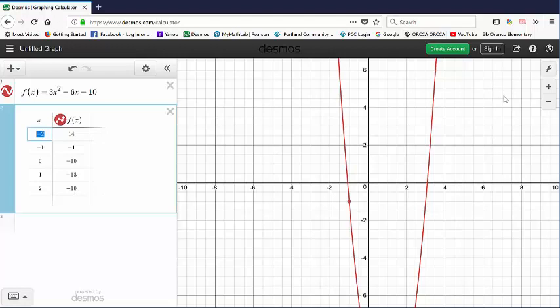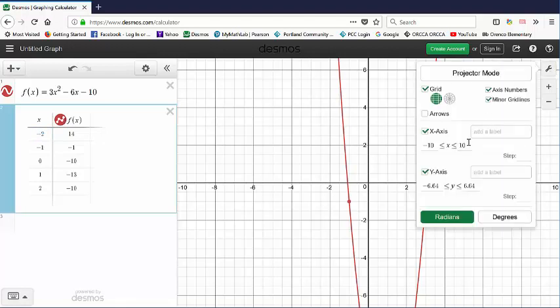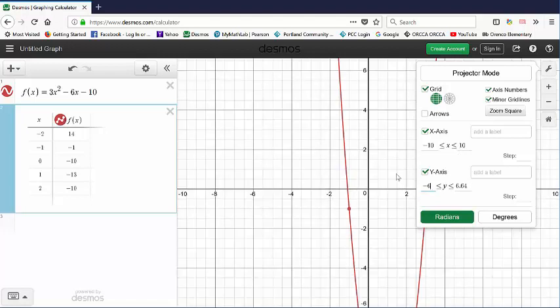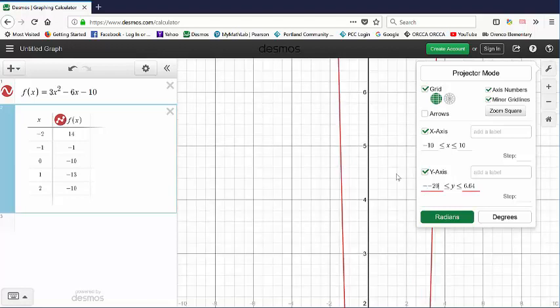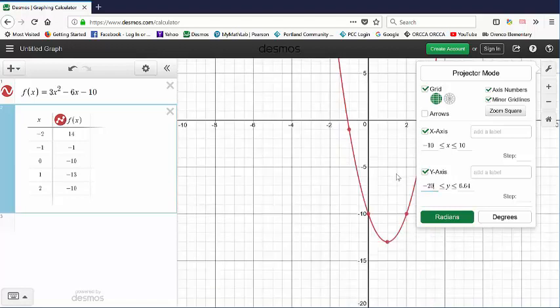That might not be the minimum. So remember, you can adjust this with your fingers. You can also adjust this manually. If we go, I want to see more of the y-axis on the negative side. So I want to make sure, I know I have to go down at least to negative 13. I'm going to go down to negative 20 just to make sure that we see the whole thing there.